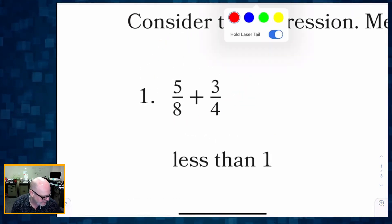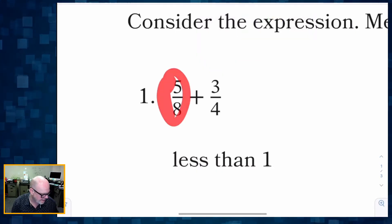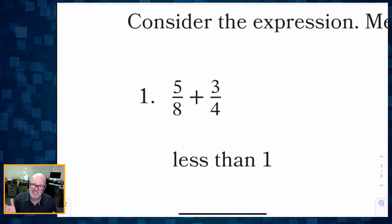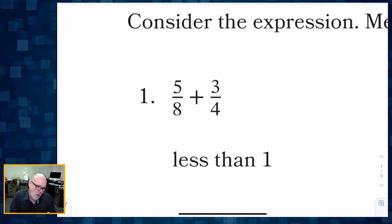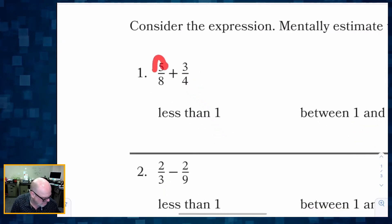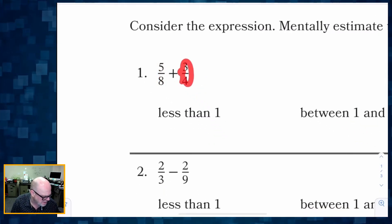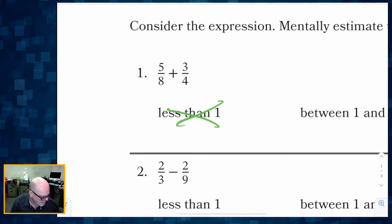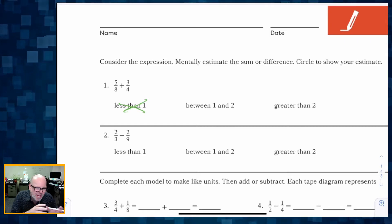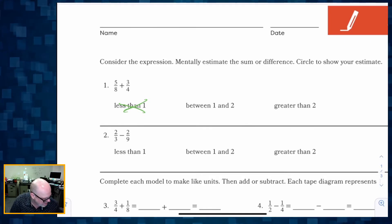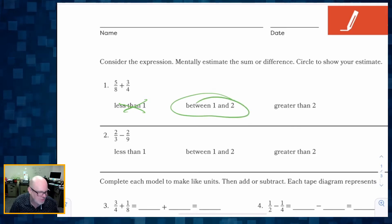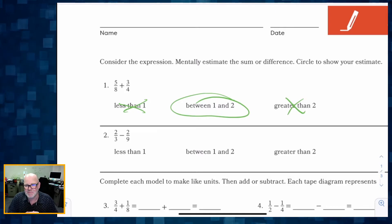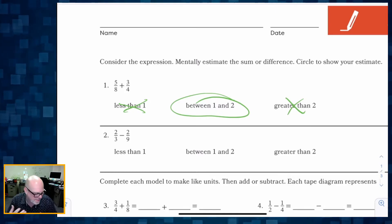I know that five-eighths is a little bit bigger than a half but not by much, and three-fourths is bigger than a half but less than a whole. So something bigger than a half plus something bigger than a half cannot be less than one. Since they're both bigger than a half but less than one, our answer is going to be between one and two. There's no way it could be greater than two.